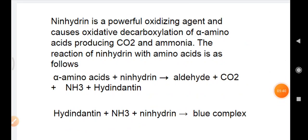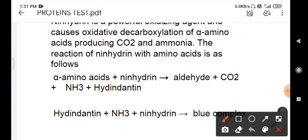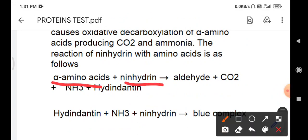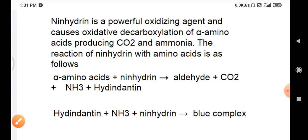So, why we use ninhydrin for this test? Ninhydrin is a powerful oxidizing agent and causes oxidative decarboxylation of alpha amino acids producing carbon dioxide and ammonia. The reaction of ninhydrin with amino acids is as follows. The alpha amino acids plus ninhydrin gives aldehydes, carbon dioxide, ammonia and the hydrindantin. This hydrindantin plus ammonia and ninhydrin will form a blue complex.